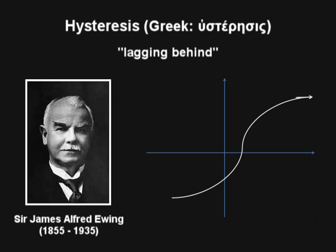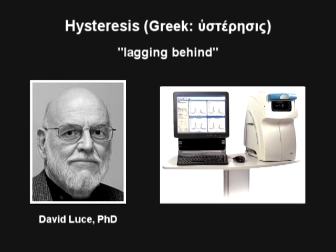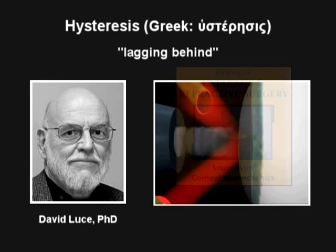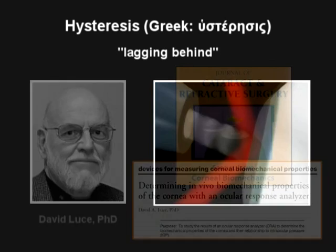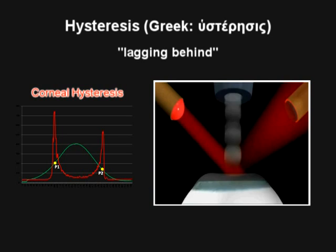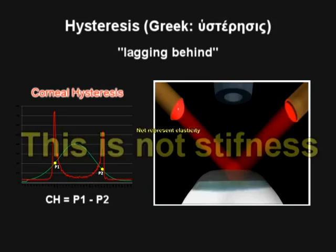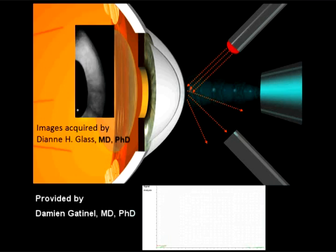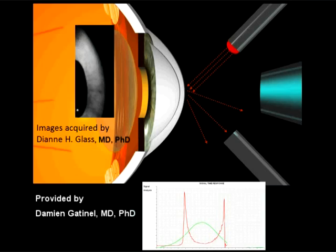Hysteresis was coined by Sir James Alfred Ewing, who studied magnetic materials. David Luce from Reichert developed the Ocular Response Analyzer, a modified non-contact tonometer that represents the first clinical tool for assessing in vivo corneal biomechanical properties. Corneal hysteresis represents the ability of the cornea to dissipate energy, or a measure of the viscous damping of corneal tissue. This is not stiffness and does not represent elasticity. These cartoon simulations provide an easy understanding of the dynamic bidirectional applanation process.